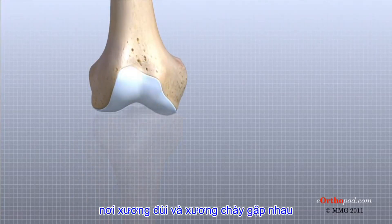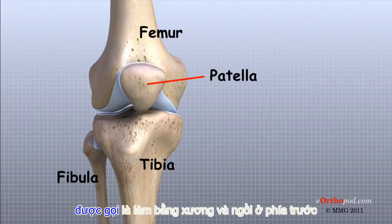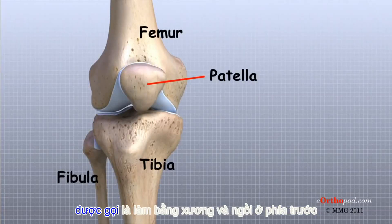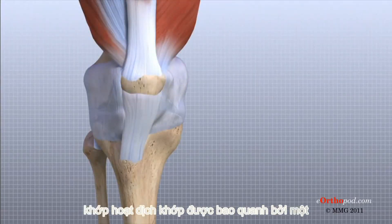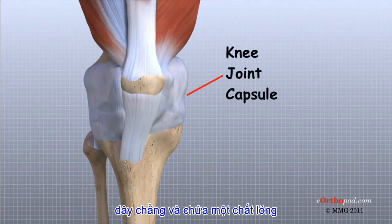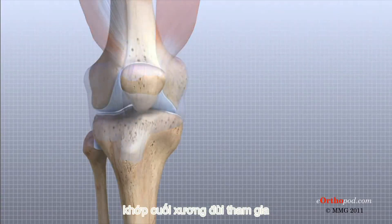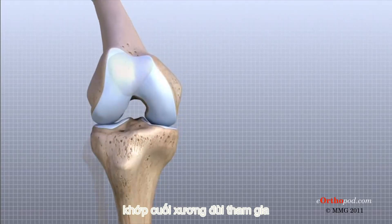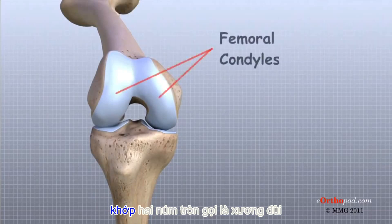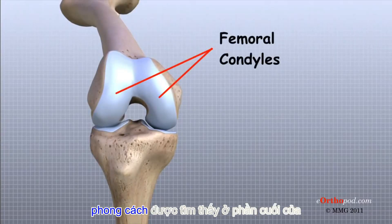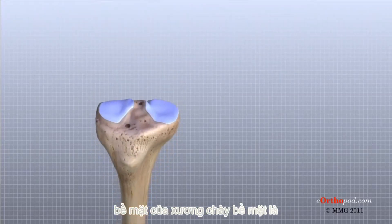The knee is the joint where the femur and the tibia meet. The patella, or kneecap as it is commonly called, is made of bone and sits in front of the knee. The knee joint is a synovial joint — synovial joints are enclosed by a ligament capsule and contain a fluid called synovial fluid that lubricates the joint. The end of the femur joins the top of the tibia to create the knee joint. Two round knobs called femoral condyles are found on the end of the femur, and these condyles rest on the top surface of the tibia.